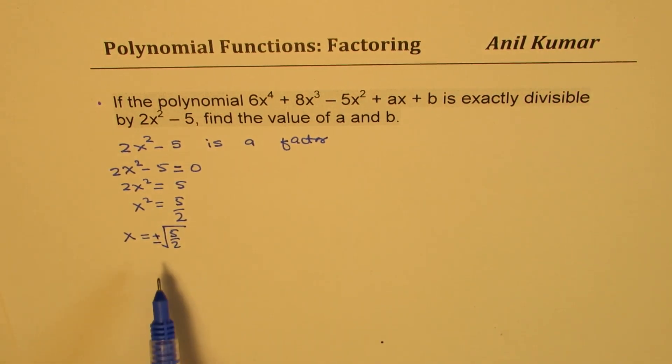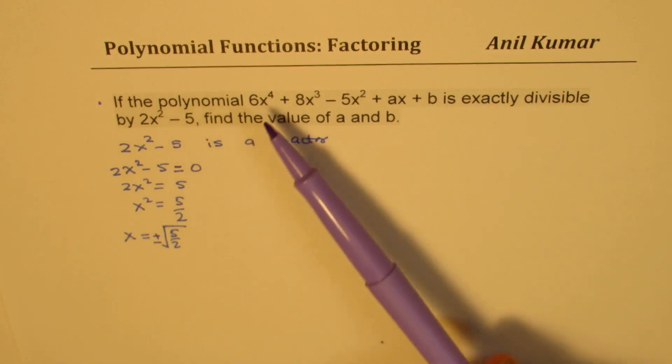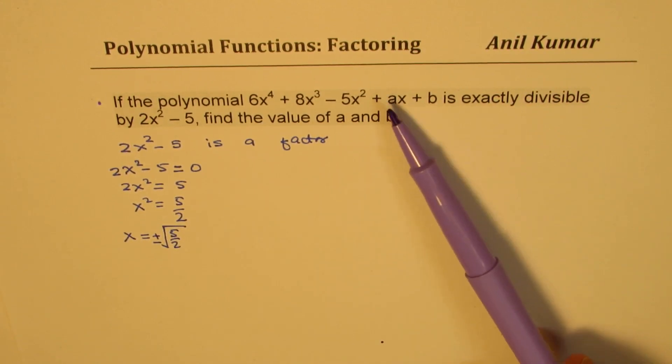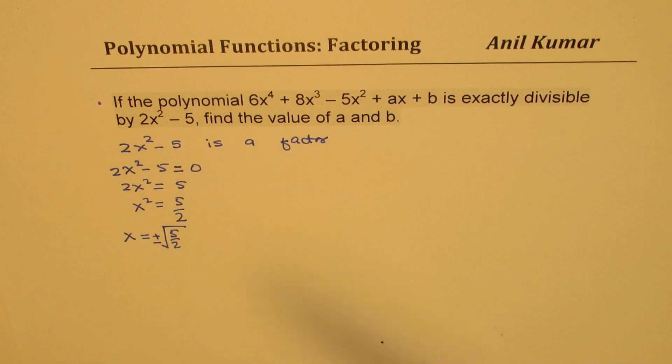You get a 0 for these values. So one method is you can substitute this value of x in the equation. There are two values. So you get two equations and you can solve for a and b.